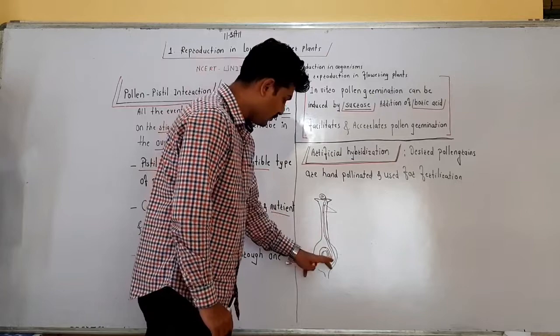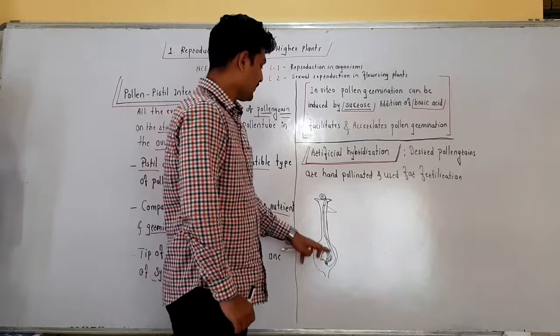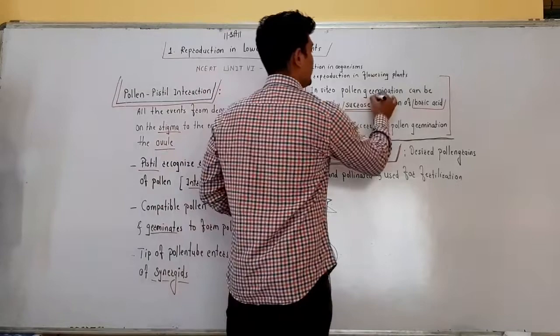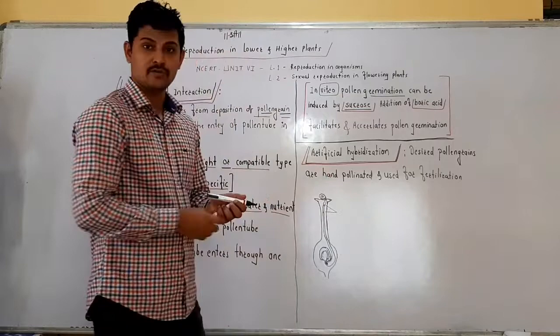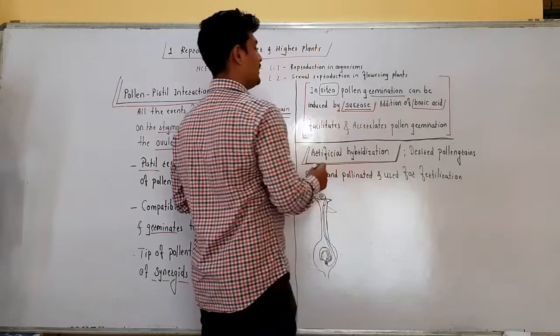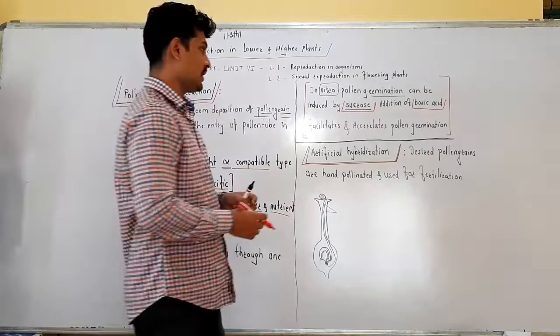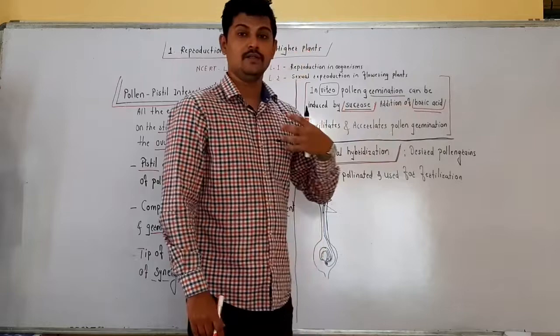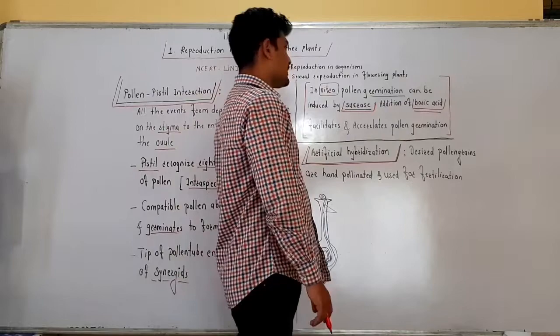When the pollen tube enters into the ovule, the two male gametes also enter into the ovule. All these interactions are called pollen-pistil interaction. We can also germinate the pollen grain inside a test tube — in vitro pollen germination can be induced using sucrose solution. We can also add boric acid; addition of boric acid facilitates and accelerates the process of pollen germination, meaning the formation of the pollen tube.